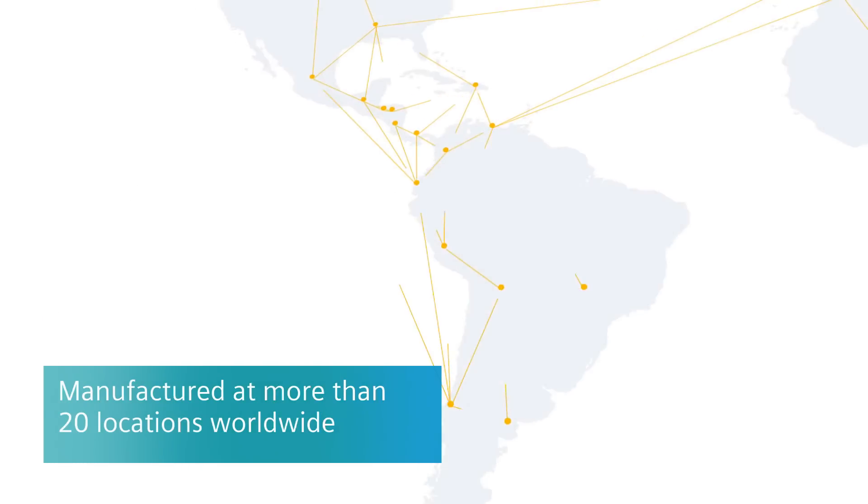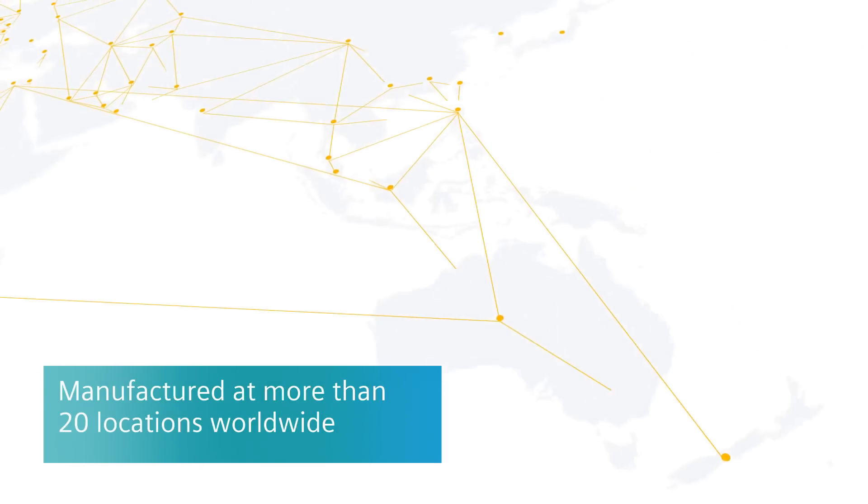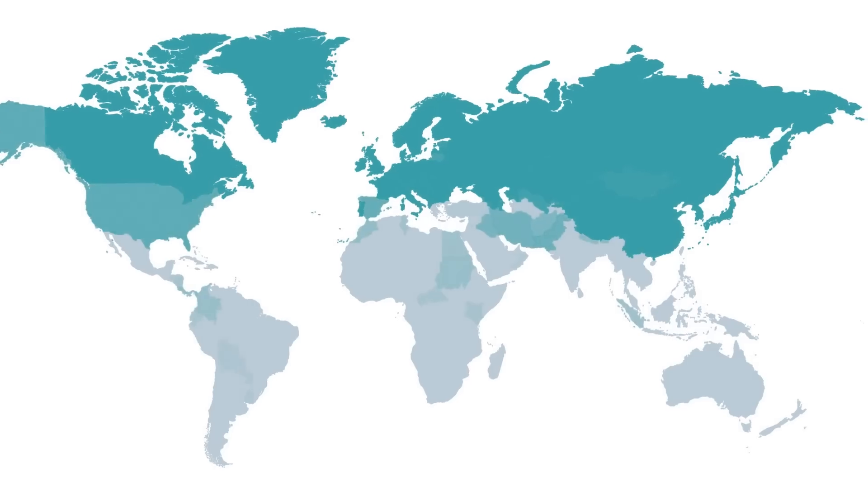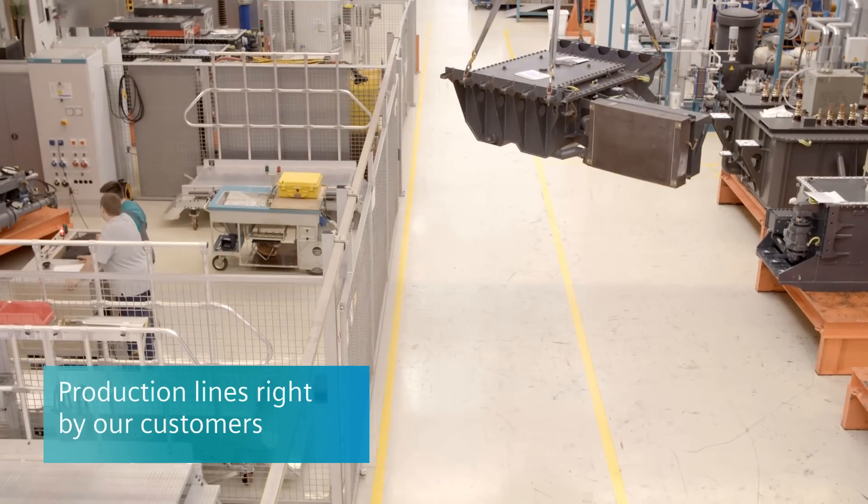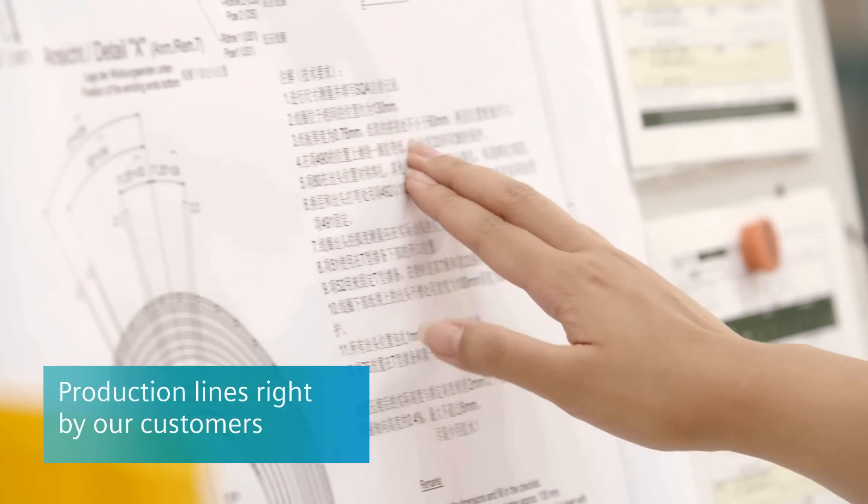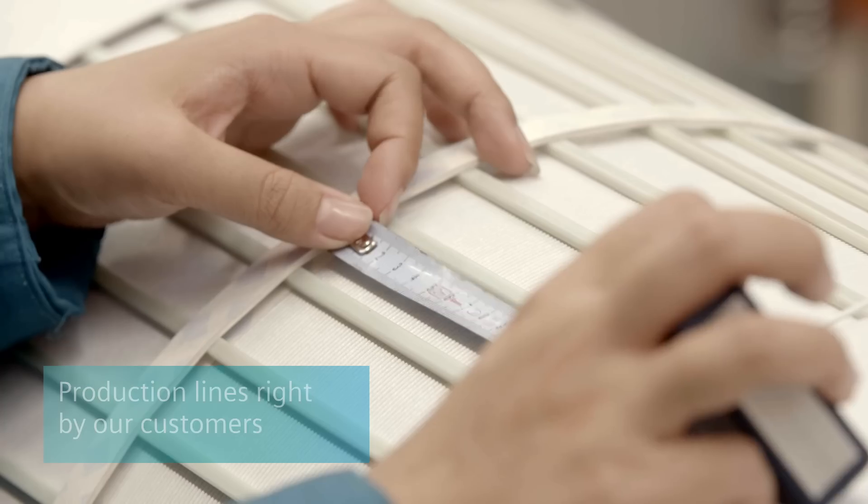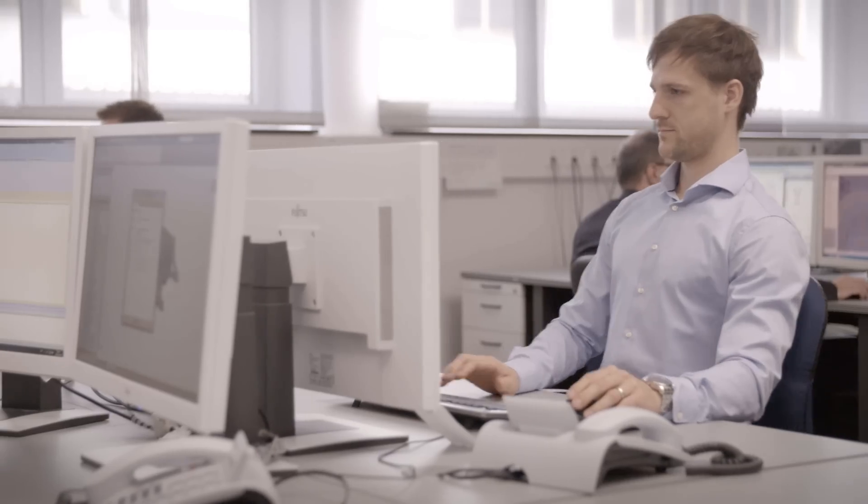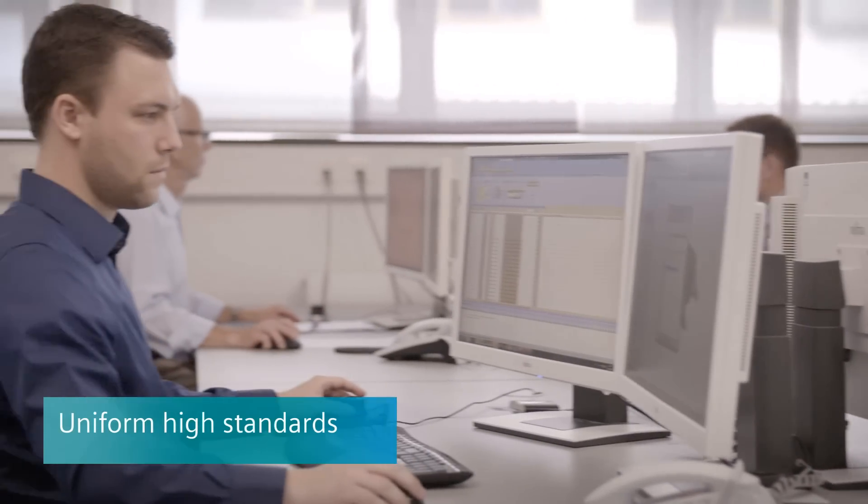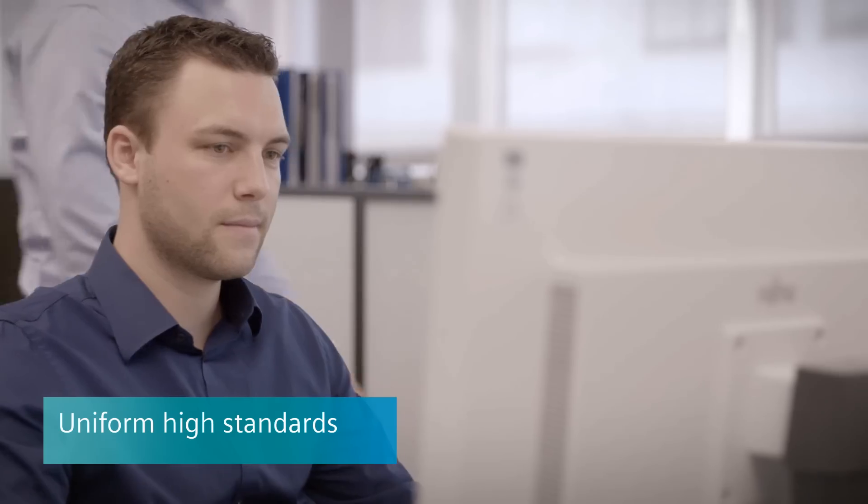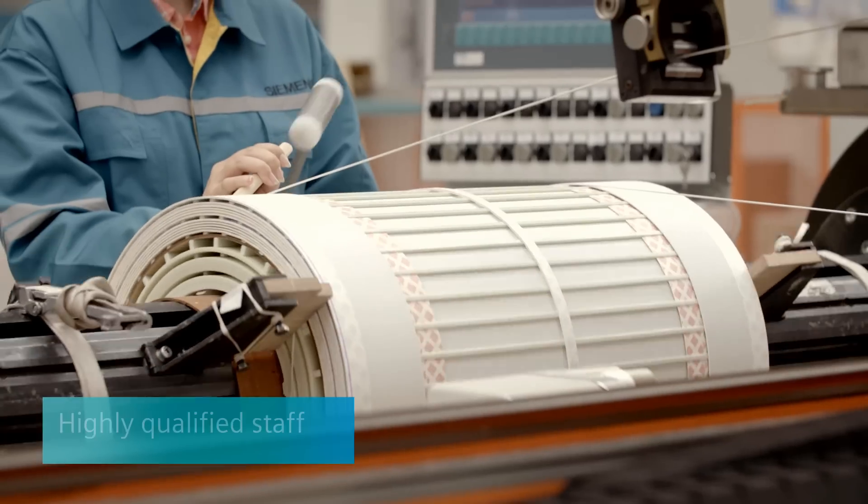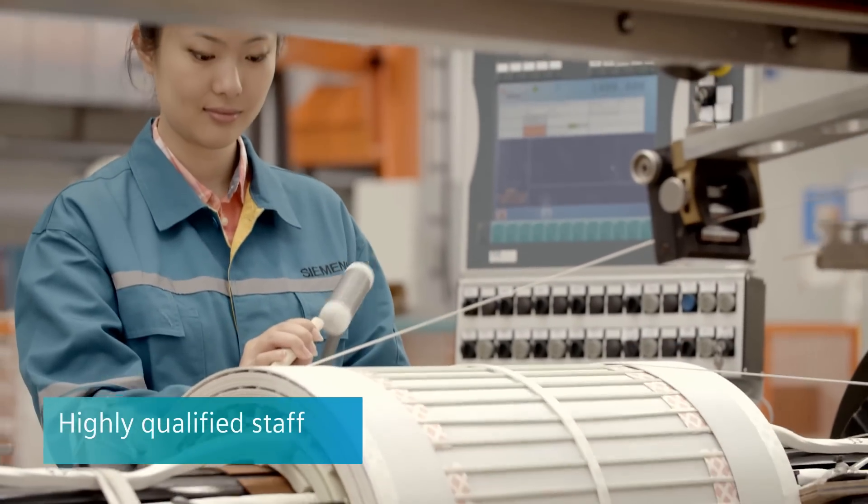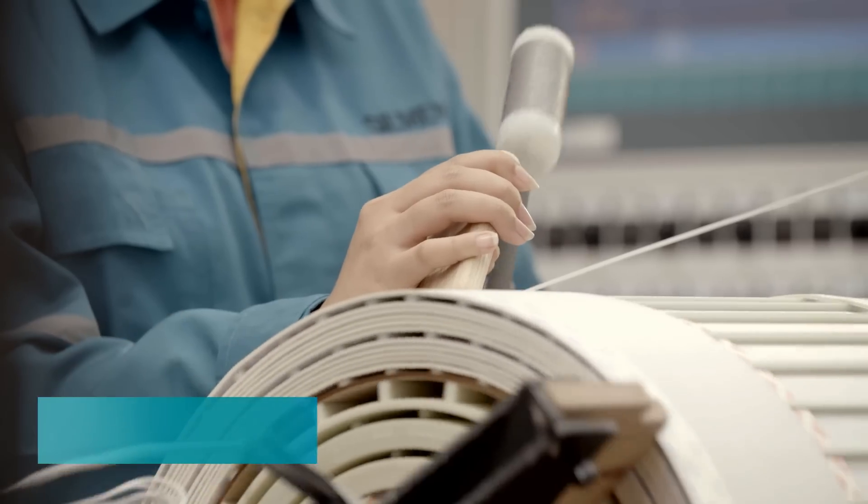Siemens manufactures transformers at more than 20 locations across the globe to best meet customer needs. New production lines for Tractronic transformers can be set up in convenient locations for our customers if required. Uniform high-quality standards are defined at the center of competence in Nuremberg, Germany. They are then implemented in the same way by highly qualified staff at modern machine parks all over the world.